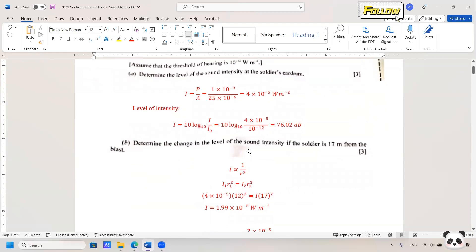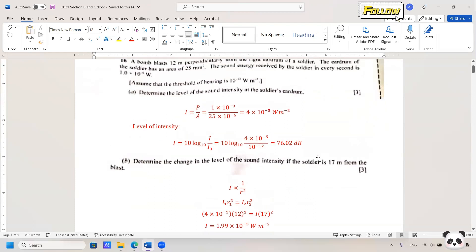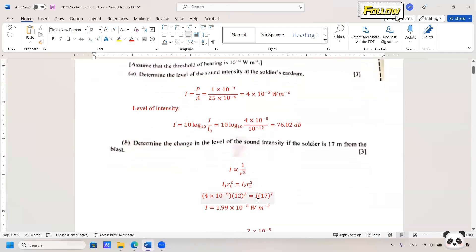Determine the change in the level of the sound intensity if the soldier is 17 meters from the blast. So now we have a change in the distance from 12 meters to 17 meters, and we learned about the relationship between the intensity and the distance that it is inversely proportional to the square of the distance. So apply the ratio, put in the values, and we can obtain the new intensity is about 2 times 10 to the negative 5 watt per meter squared.